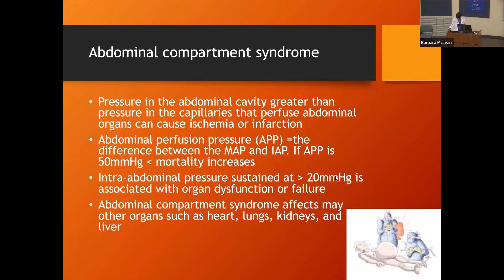Patients can get abdominal compartment syndrome, where the pressure in the abdomen is greater than the pressure in the capillaries. I see this in patients with liver problems — cirrhosis — and also from intra-abdominal bleeding. The abdominal perfusion pressure (APP) is the difference between the MAP and the intra-abdominal pressure. The higher the pressure, the greater the mortality. Serious injury to the abdomen can cause real problems.